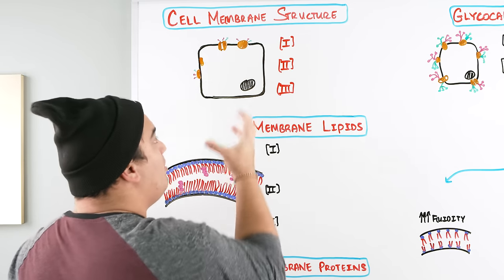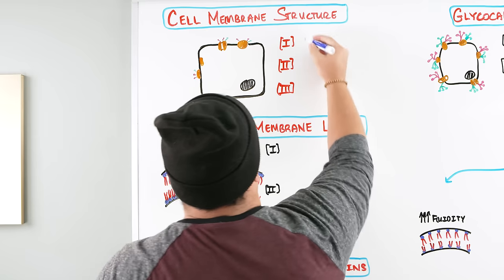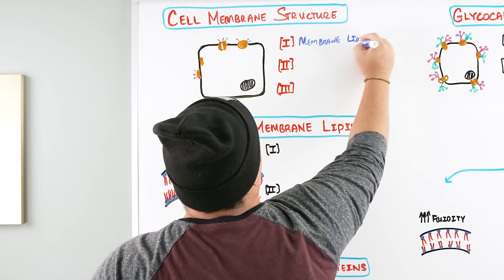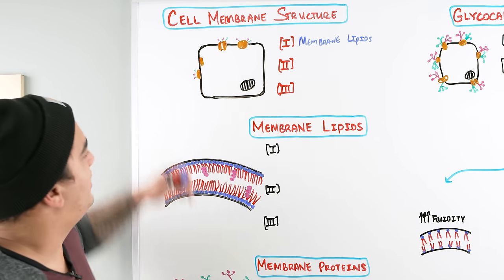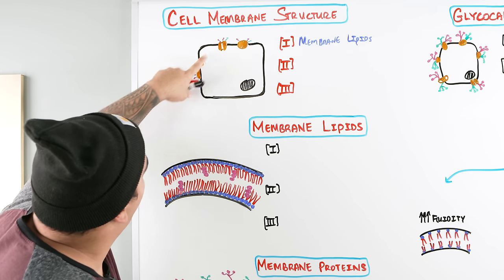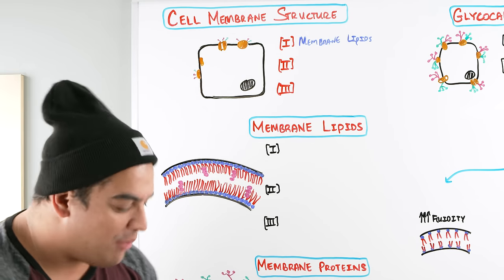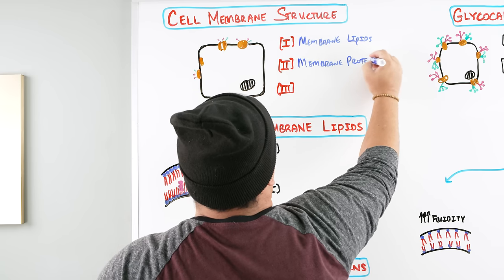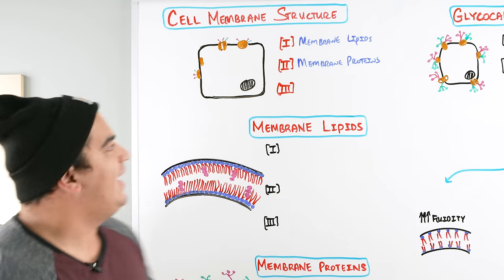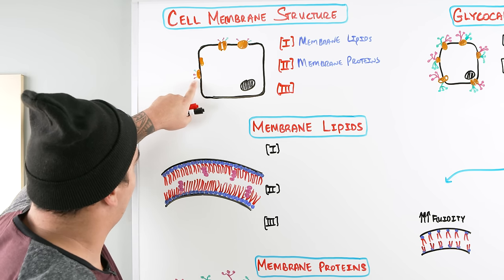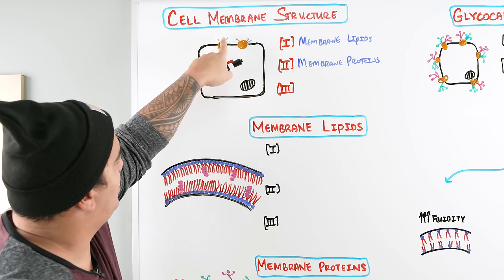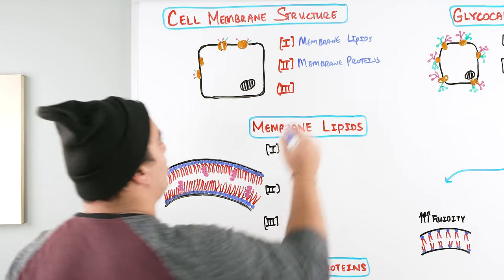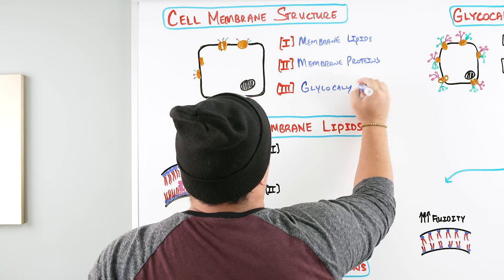The first component is called the membrane lipids, and this includes phospholipids, fatty acids, and cholesterol. The second component is the membrane proteins — these orange proteins spanning the cell membrane or linked on the inner or outer surface — which have various different functions. The last component is the glycocalyx, a glycoprotein and glycolipid network on the outside of the cell, represented by sugar residues and lipid extensions on the membrane proteins.